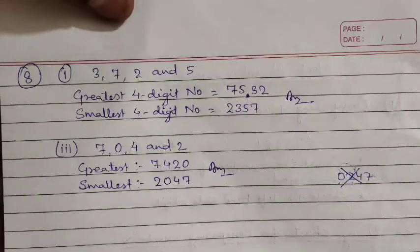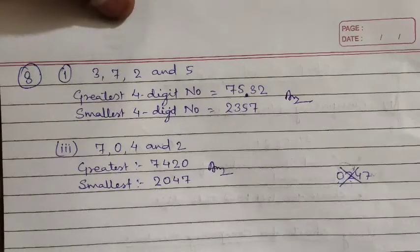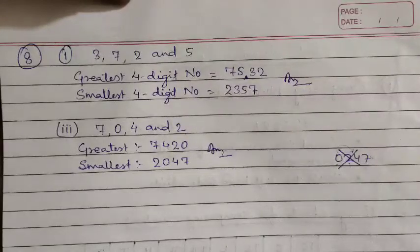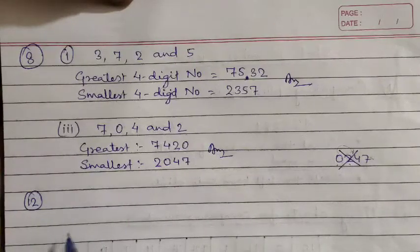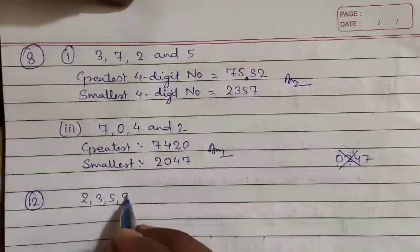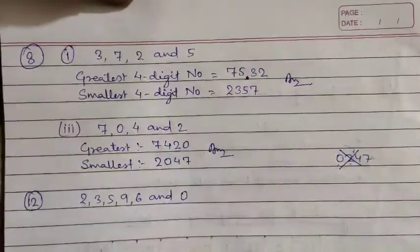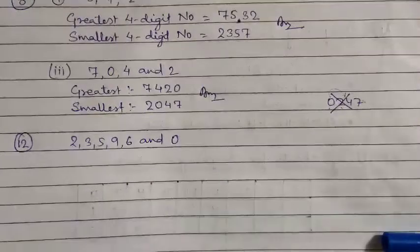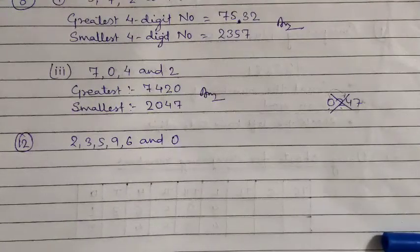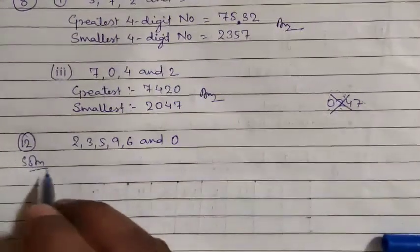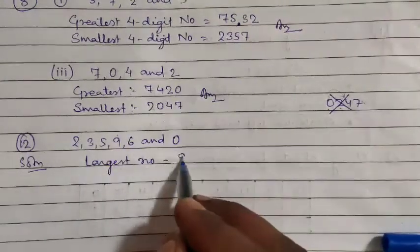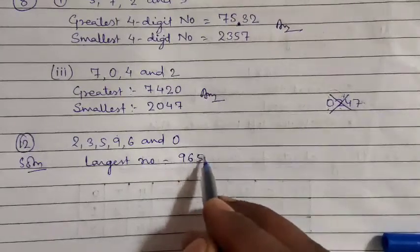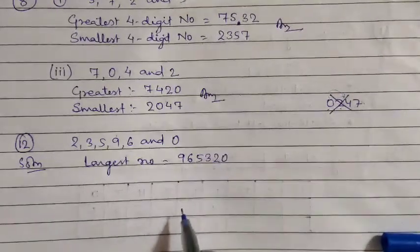Questions 9, 10, and 11 you have to do by your own. Question 12: Form the largest number using digits 2, 3, 5, 9, 6, and 0 without repetition. Taking the digits from largest to smallest: 9, 6, 5, 3, 2, 0 — giving 965320 as the largest number.